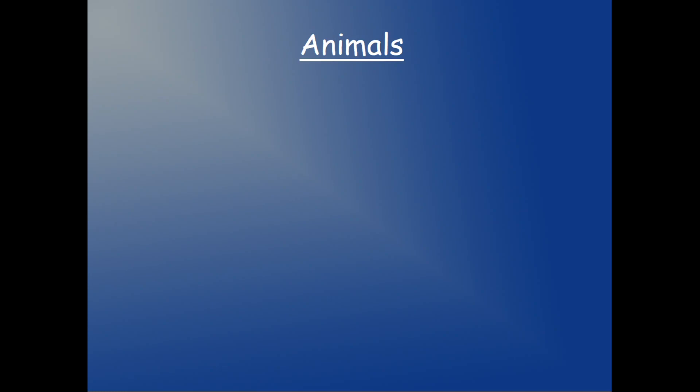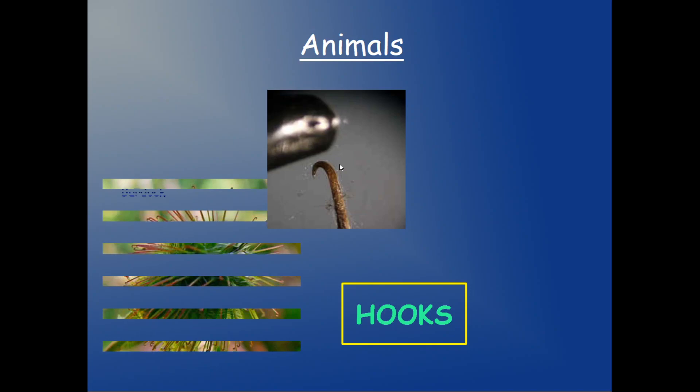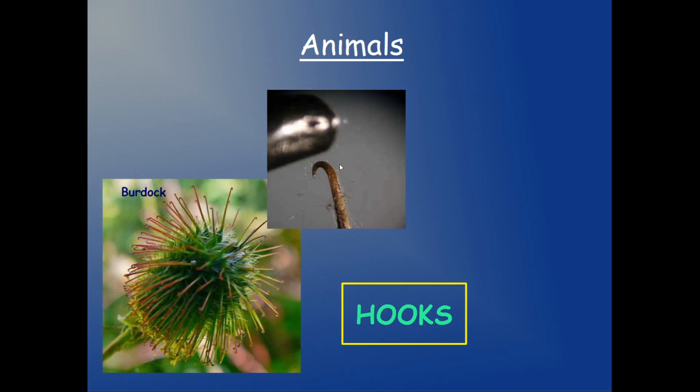How do plants use animals to spread their seeds? They have different tactics. One of them is using hooks. You can see here the hook. This is the plant, not the animal. Plants cover their seeds with lots of hooks, like for example the burdock.